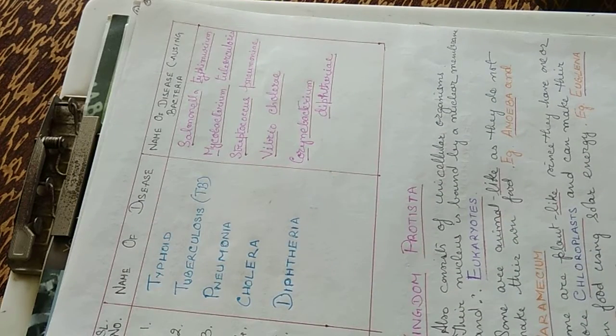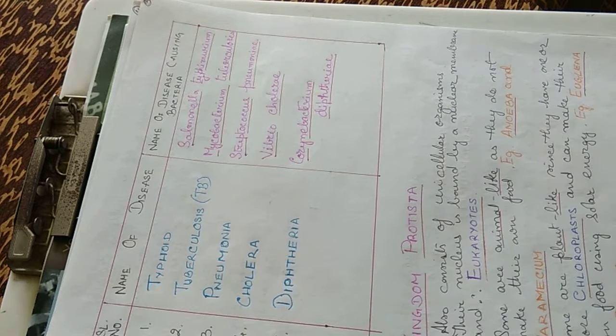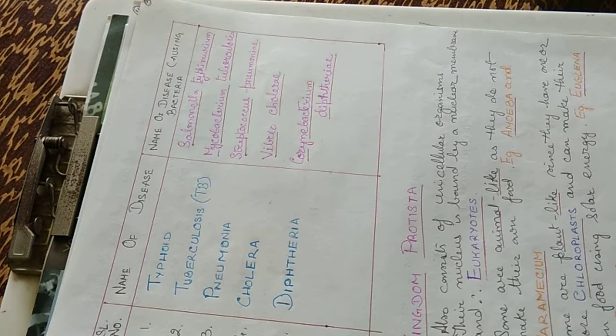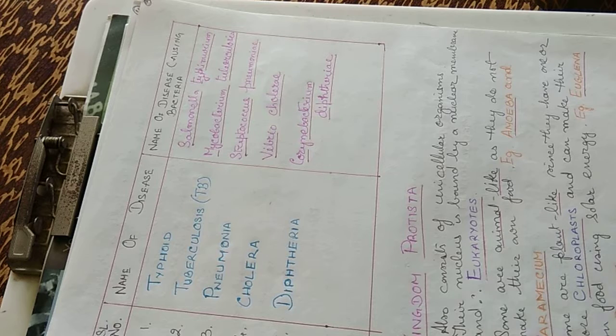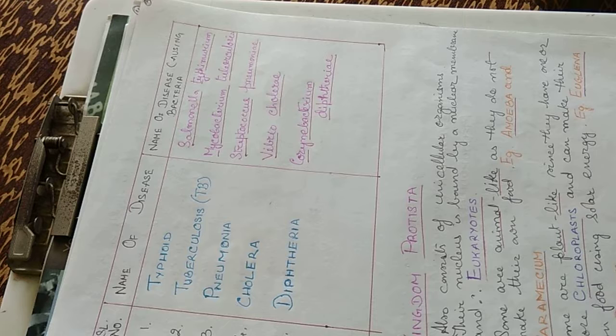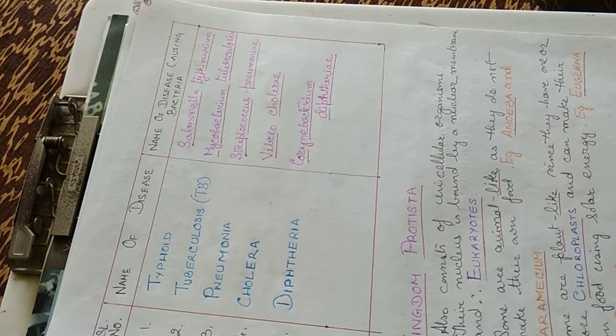Kingdom Protista also consists of unicellular organisms. Their nucleus is bound by nuclear membrane, that's why they are eukaryotes. Some are animal-like as they do not make their own food like amoeba and paramecium. Some are plant-like since they have one or more chloroplasts and can make their own food using solar energy like euglena and diatoms.